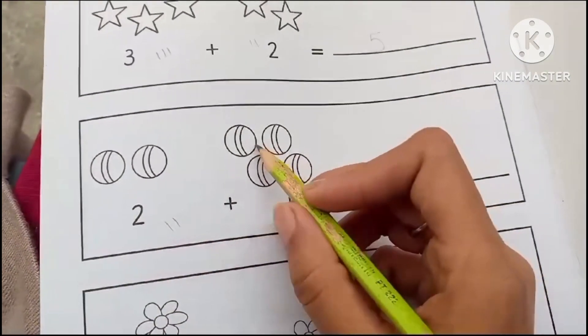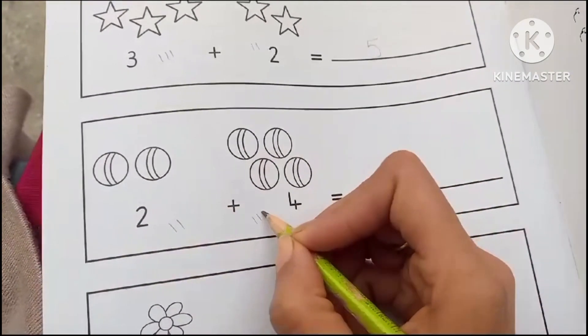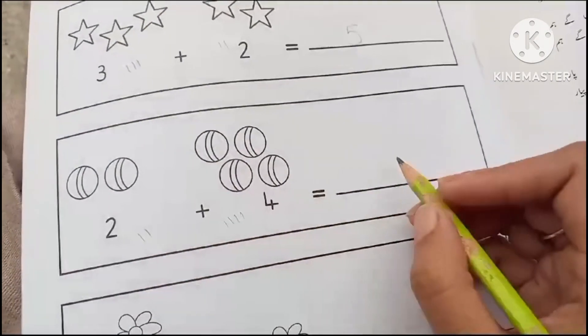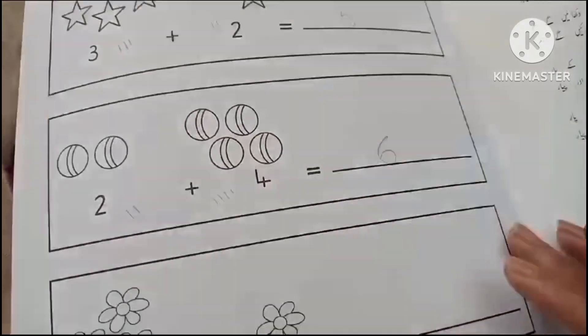1, 2, 1, 2, 3, 4. So 1, 2, 3, 4, 5, 6. 6 balls all together.